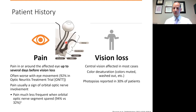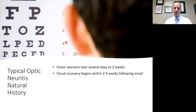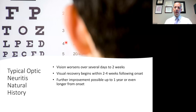Most often the central vision is affected and often there is color desaturation. Patients may describe that as colors being muted, washed out, or pastel. Photopsias are reported in a significant minority of patients, about 30%. The vision typically worsens over several days up to about two weeks. It's rare that the patient would have maximal onset of vision loss right at onset — that would usually be more suggestive of an ischemic disorder. Visual recovery begins within two to four weeks following onset in a typical case, and further improvement is possible even up to one year or sometimes longer. Most improvement happens within months after the episode.